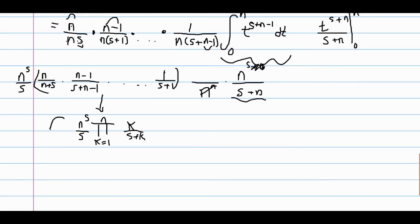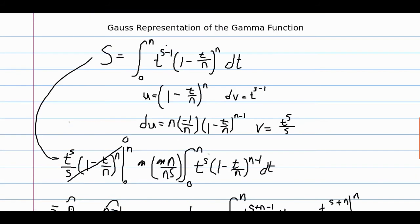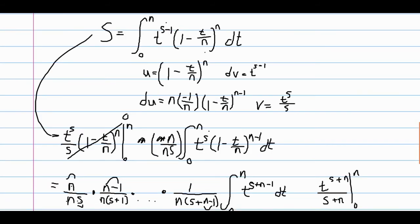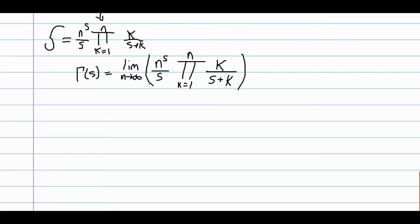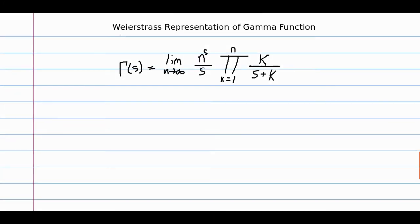So this is what our capital S was originally equal to. We noted that the limit as n goes to infinity of capital S is gamma of s. So from that we can claim that gamma of s is equal to the limit of this product. This is what we call the Gauss representation of the gamma function. We're going to prove another representation of the gamma function using the Gauss representation.